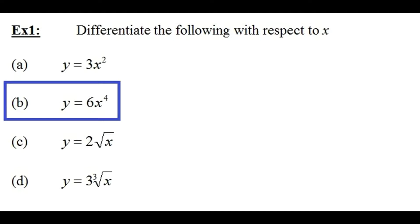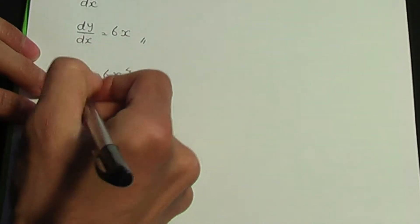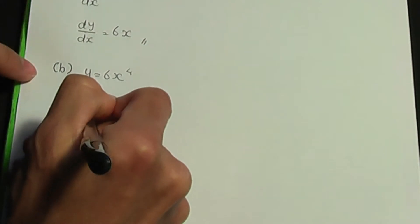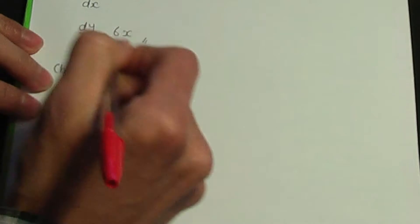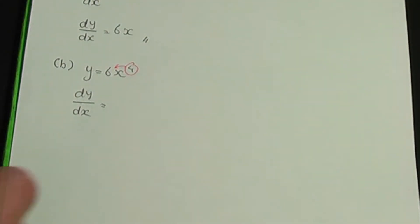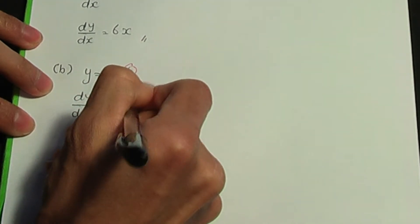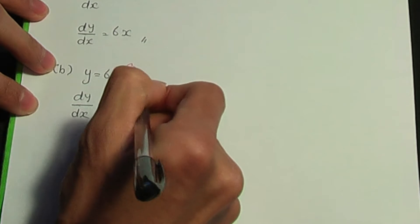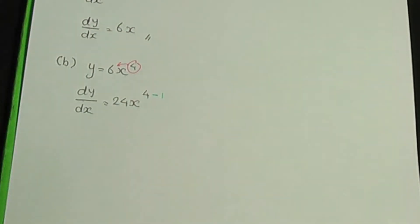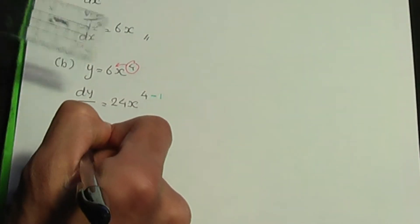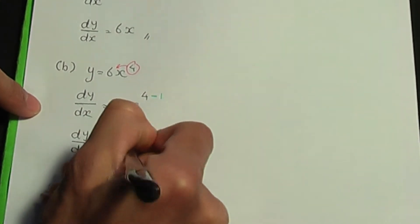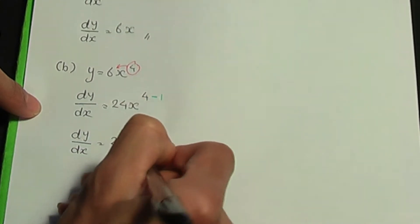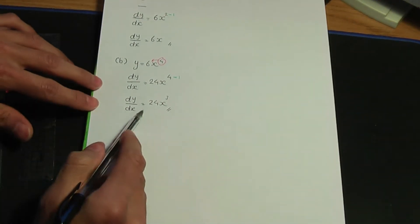Part b: y equals 6x to the power 4. Multiplying by the power — the power is 4, so 4 times 6 gives 24 — we get 24x. Then subtracting 1 from the power: 4 minus 1 is 3. So dy over dx equals 24x cubed.